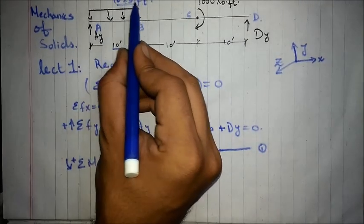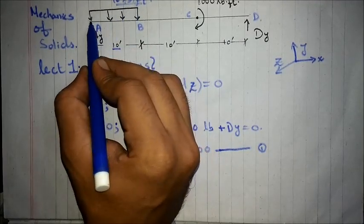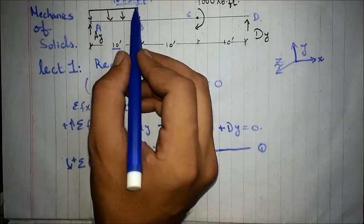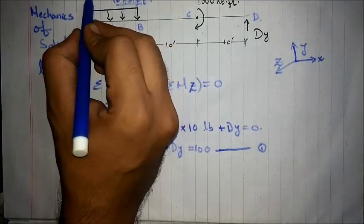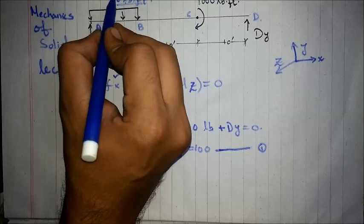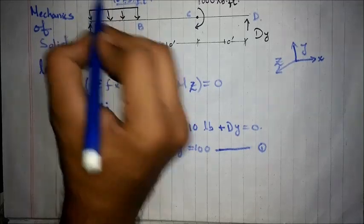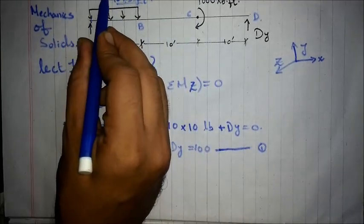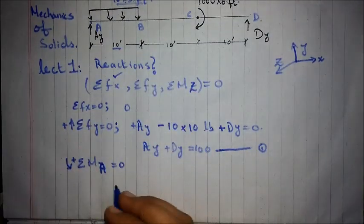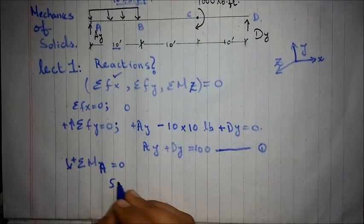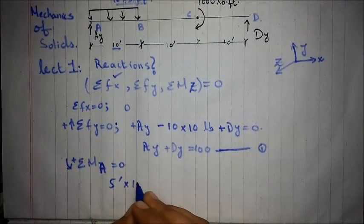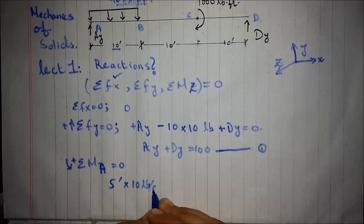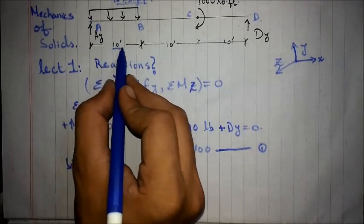Now, let's just consider the first force, that is, 10 pounds per foot. Having a centroid at half of the distance, since it is a rectangular force, half of the distance of 10 feet is 5 feet.